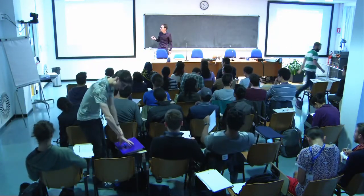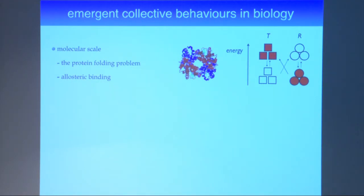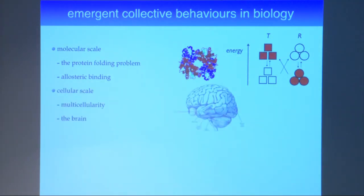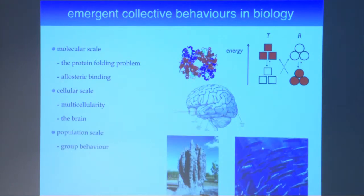You see this in physics, like in magnets, but also in biology at a wide variety of scales. At the molecular scale there's the protein folding problem and allosteric binding. At the cellular scale, the way different cells interact to form an organism is collective behavior — one example is the brain, where many neurons interact leading to emergent behavior. At the population scale, how different individuals interact gives rise to collective behavior you couldn't predict by observing individuals one by one.